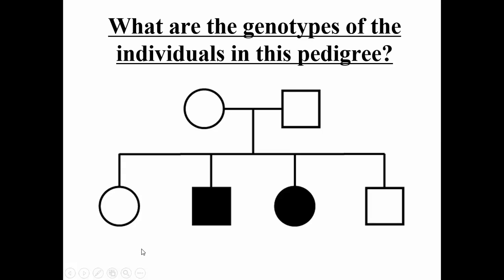A more difficult scenario is identifying the genotype of an unaffected offspring. We know they're not little-a, little-a because they're not shaded in. But are they big-A, big-A or big-A, little-a? Either scenario could result from these parents. We don't know what the genotype is, and we don't know because they haven't had children of their own yet.